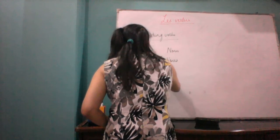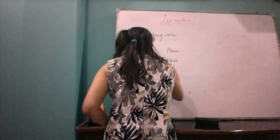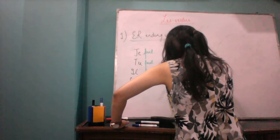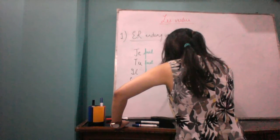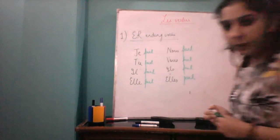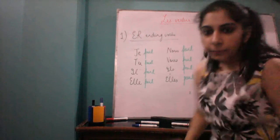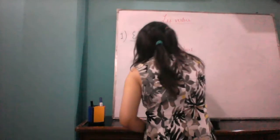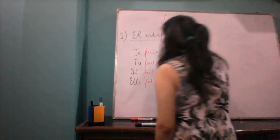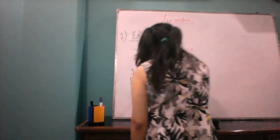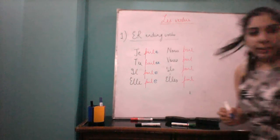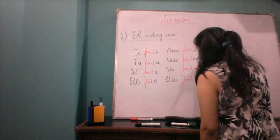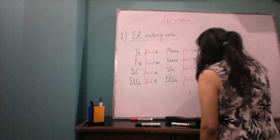We write the stem everywhere — for 'parler' the stem is 'parl' — and then we add the endings. With je we have the ending E. With tu we have the ending ES. With il we have the ending E. With elle the ending is again E. With nous we have the ending ONS. With vous we have the ending EZ, and with ils/elles we have the ending ENT.